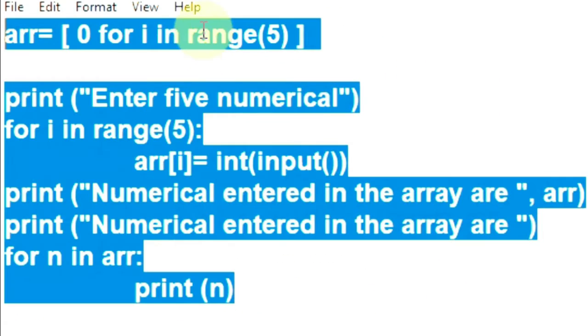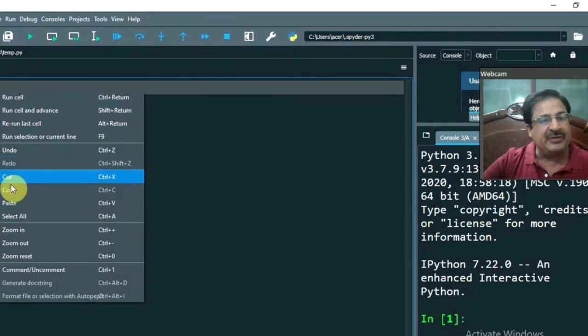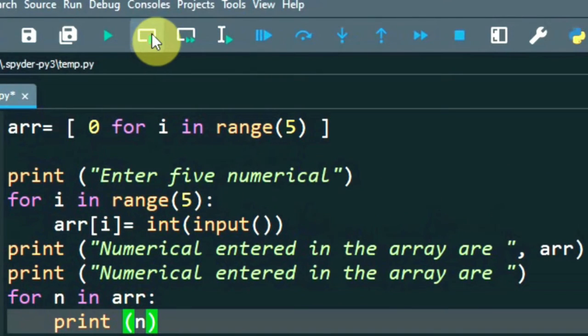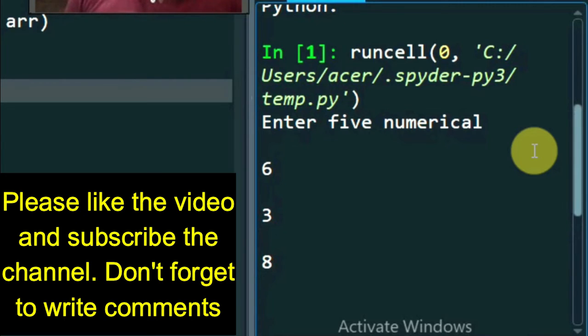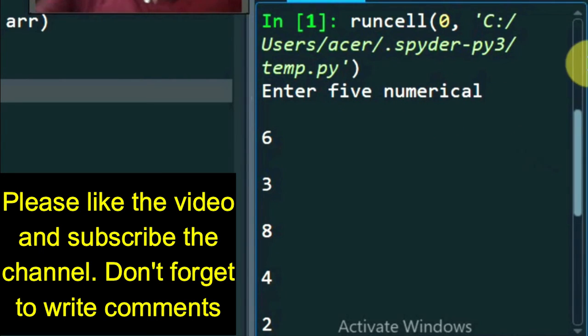Let's copy this program and in the spider IDE, right click and paste it. Now, let us run this program. It is asking you to enter the five elements. I have entered 6, 3, 8, 4, 2. This is assigned to your arr[0] index location, arr[1], arr[2], arr[3] and arr[4].